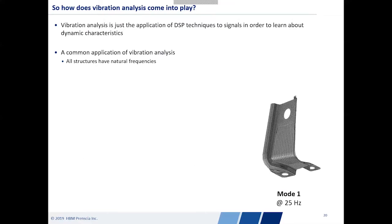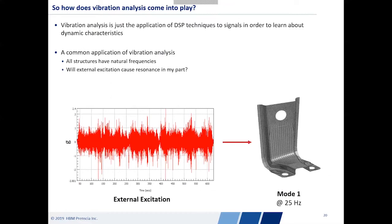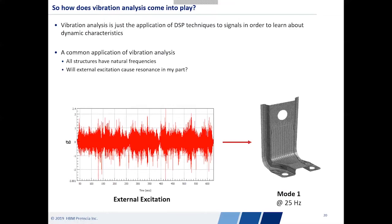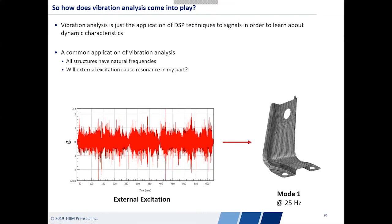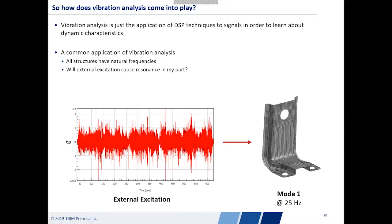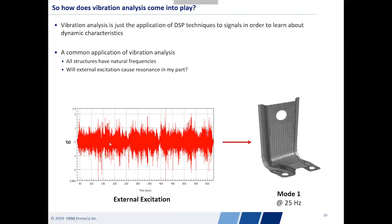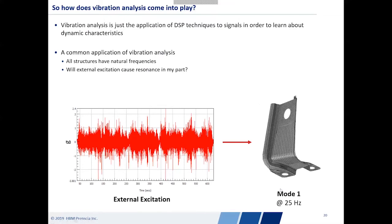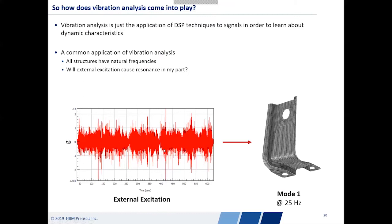From a DSP perspective, what we're interested in is learning whether external excitation can cause resonance in my part. If I stick an accelerometer on my part and measure the input excitation, I want to know: will this usage environment cause excitation at a natural frequency that will start causing large displacements? Looking at a time domain signal alone, there's really no way to tell — I can see accelerations going back and forth but have no way to know if there's anything at a specific frequency like 25 hertz.